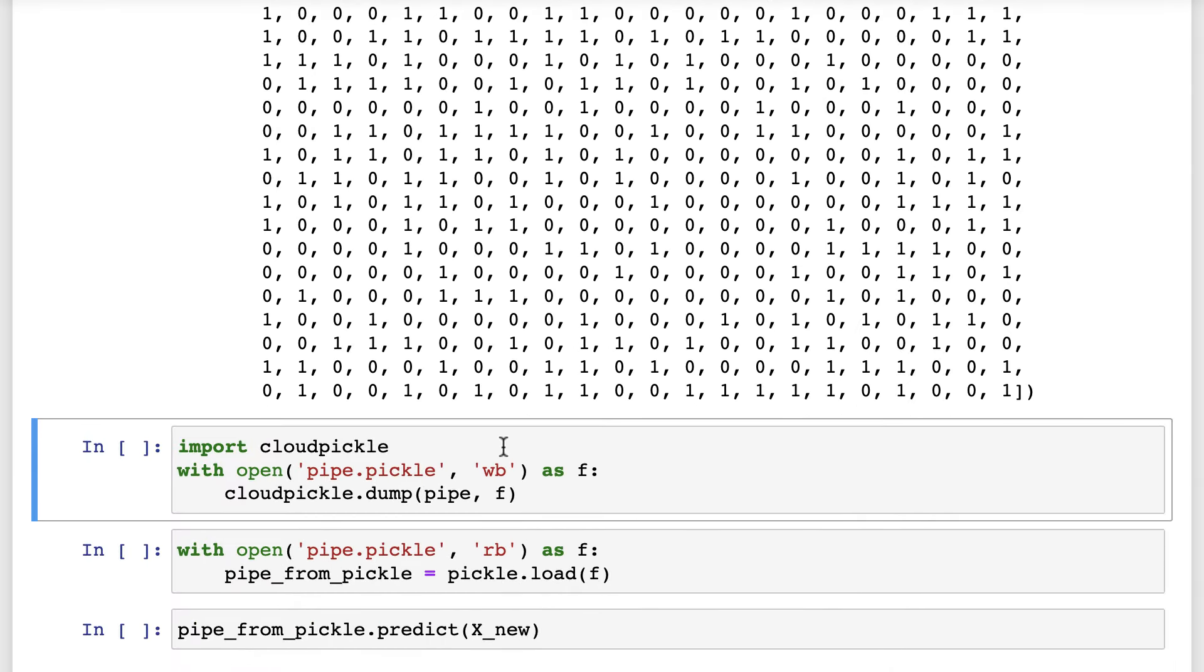Cloud Pickle extends the functionality of Pickle to allow you to save user-defined functions. All you have to do is to install Cloud Pickle using pip or conda, import it, and then save the pipeline using Cloud Pickle instead of Pickle.